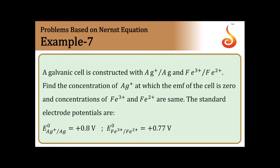A galvanic cell is constructed with an Ag+/Ag (silver) electrode and a Fe3+/Fe2+ (redox) electrode. Find the concentration of Ag+ at which the EMF of the cell is 0, given that the concentrations of Fe3+ and Fe2+ are the same.